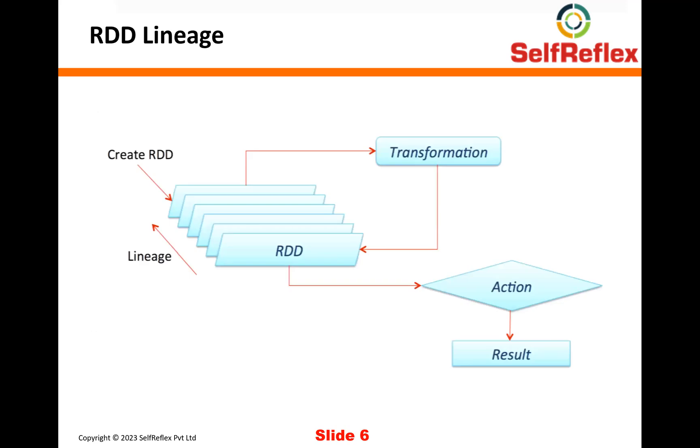So here is what exactly is happening in a pictorial form. So lineage means that when you are applying a transformation on your RDDs, it's basically recording. Spark is basically recording that from RDD 1, you applied transformation 1 and you got RDD 2. And from RDD 2, you applied transformation 2 and you got RDD 3 and so on. So it's basically recording all those transformations. And that is basically what is called lineage.